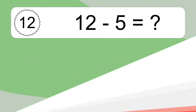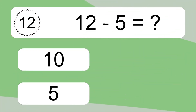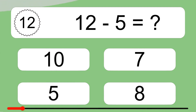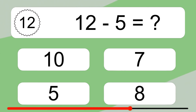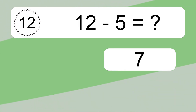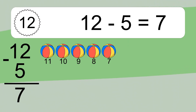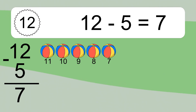12 minus 5 equals what? 12 minus 5 equals 7. Let's count it: 11, 10, 9, 8, 7.